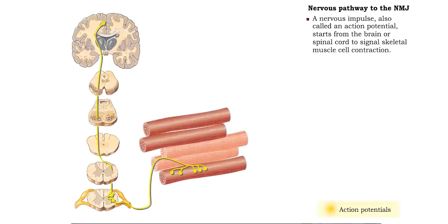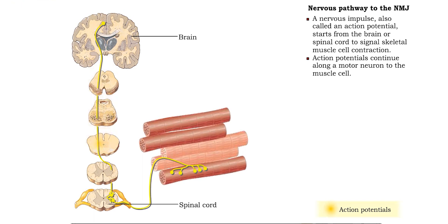A nervous impulse, also called an action potential, starts from the brain or spinal cord to signal skeletal muscle cell contraction. The action potential moves along the membrane of a motor neuron toward the skeletal muscle cell.